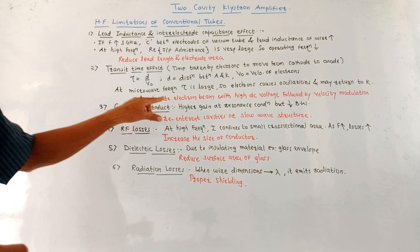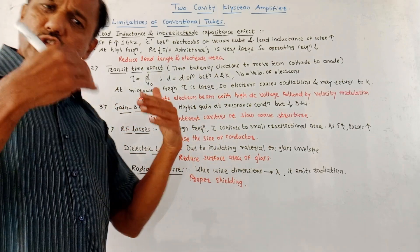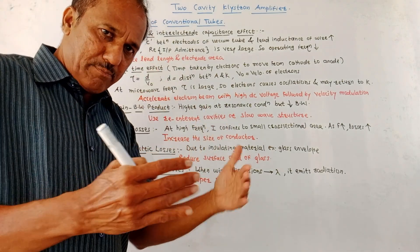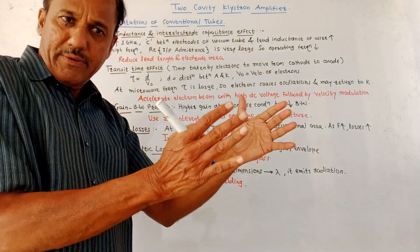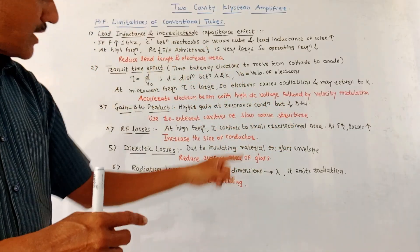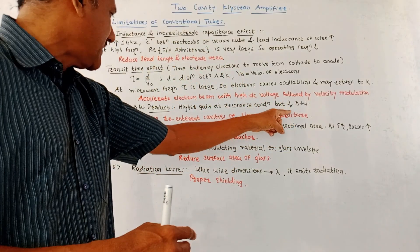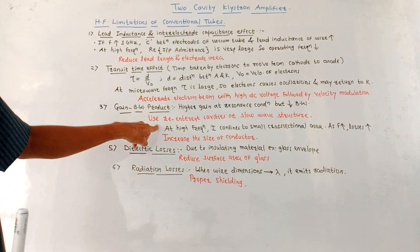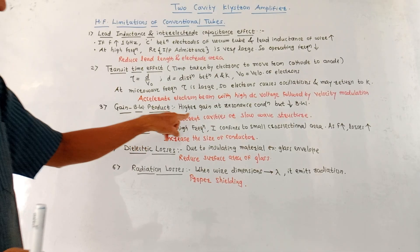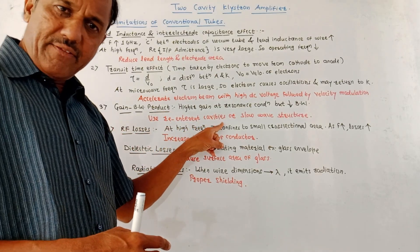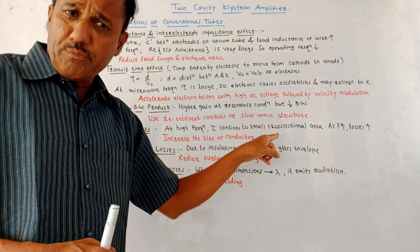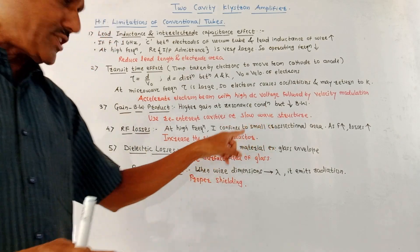The third limitation is gain bandwidth product. We know that at the resonant condition, higher gain is obtained, but the gain bandwidth product is fixed, because of which bandwidth is reduced. To avoid this, use re-entrant cavities or make use of a slow wave structure.